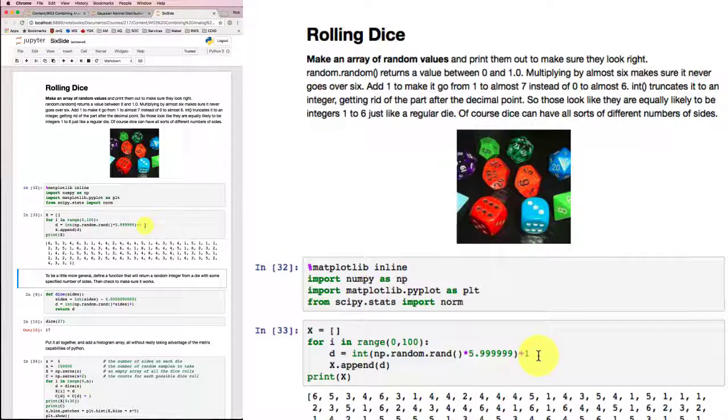And if I add 1, I'll get a number that's going between 1 and not quite 7. So if I take an integer value of that, I should get numbers that go from 1 to 6. And when I print them out, sure enough, so I do.